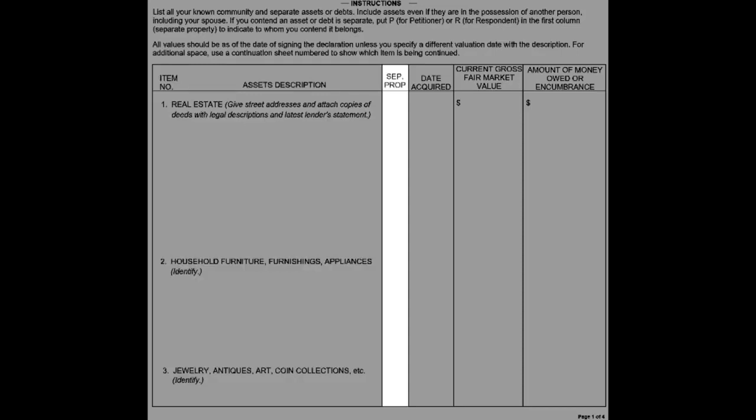The separate property column can be left blank if the item was acquired during the marriage. If it is a contended item — such as an item acquired before or after the marriage, or anything received as a gift or by inheritance at any time — write P for petitioner claiming it as yours, or R for respondent claiming it as your spouse's.